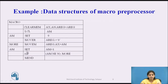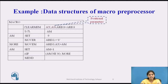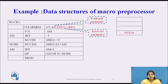Now we look at an example. In the given macro definition, the name of the macro is CLEAR M. It has three parameters: &X, &N, and &REGISTER. Here &X and &N are positional parameters, and &REGISTER=A_REGISTER is the keyword parameter.